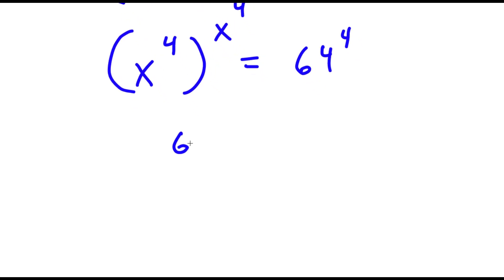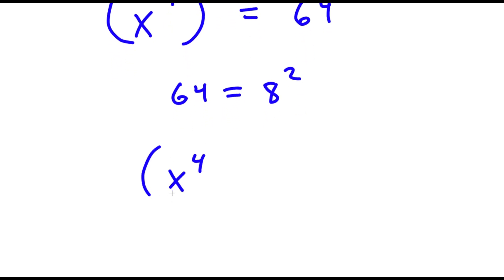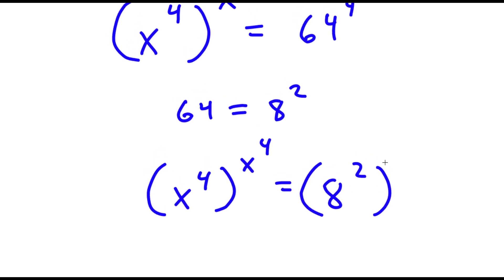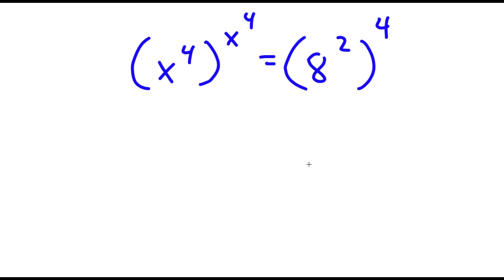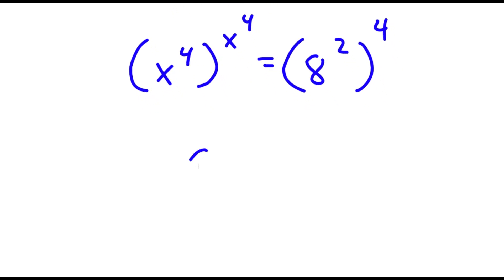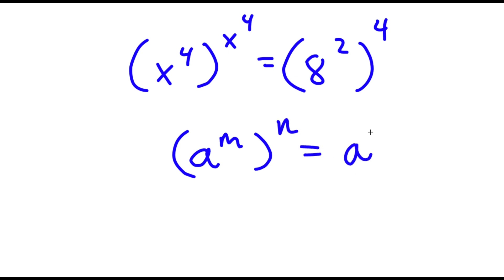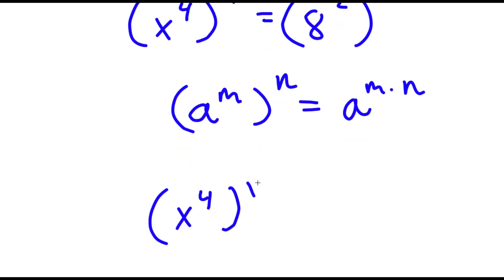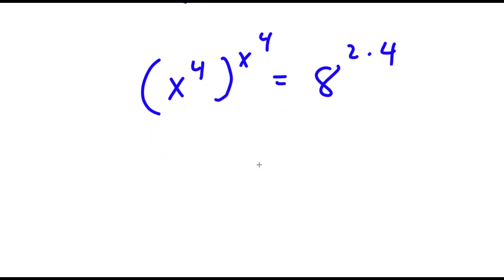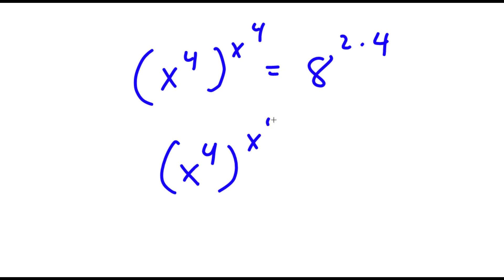Now, 64 is the same thing as 8 to the power of 2. So I have x to the power of 4, to the power of x to the power of 4, is equal to 8 to the power of 2 to the power of 4. Now if I have something in the form 8 to the power of m to the power of n, this equals 8 to the power of m times n. So 8 to the power of 2 to the power of 4 equals 8 to the power of 2 times 4, and 2 times 4 equals 8, so I have 8 to the power of 8.